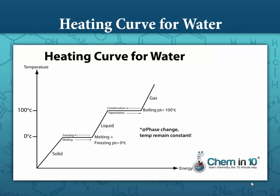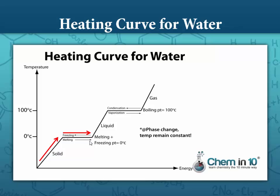Let's look at this in terms of a heating curve for water. Starting below zero degrees Celsius as a solid, when we add heat it raises the temperature up to zero degrees Celsius. At zero degrees Celsius, heat is still being added but all of it is being used to melt the ice — the latent heat of fusion. Once all the ice is melted to liquid water at zero degrees Celsius, the added heat raises the temperature from zero all the way to 100 degrees Celsius, the boiling point.